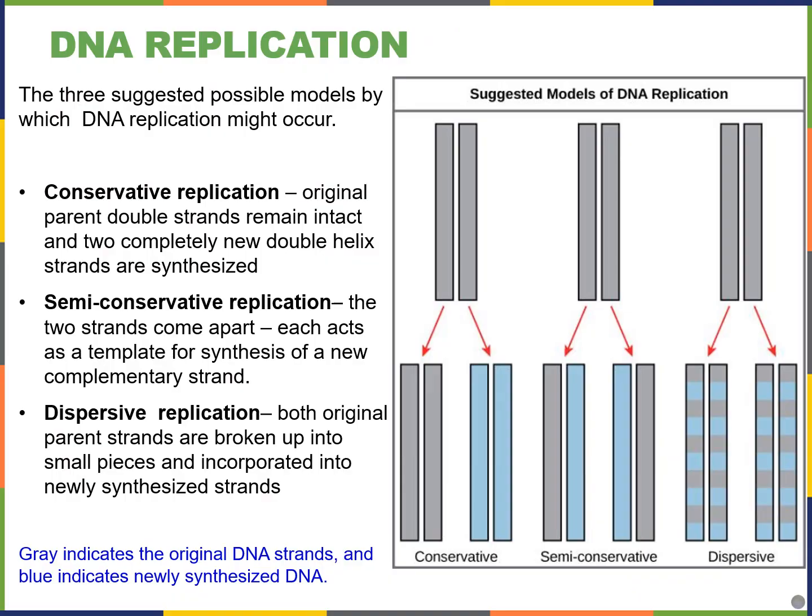Now that we know more about how DNA is compacted and the structure of DNA, let's look at how DNA replication occurs. During interphase of mitosis, specifically the S phase, we generate identical sister chromatids. When we were first looking at how DNA replication might occur, there were three suggested models — three hypotheses.